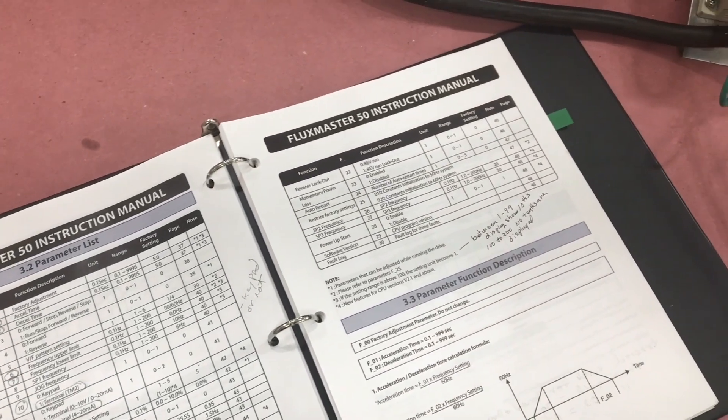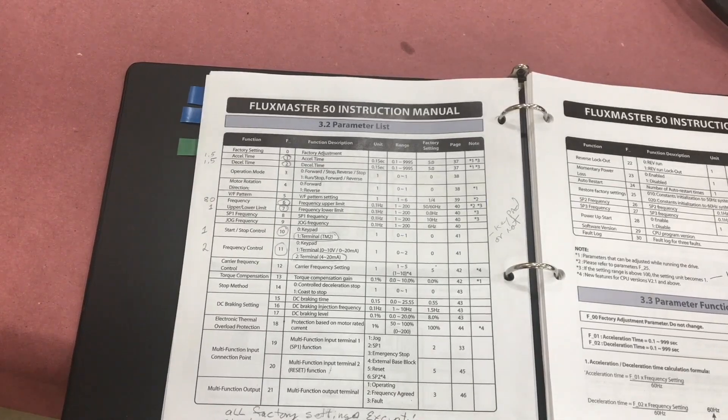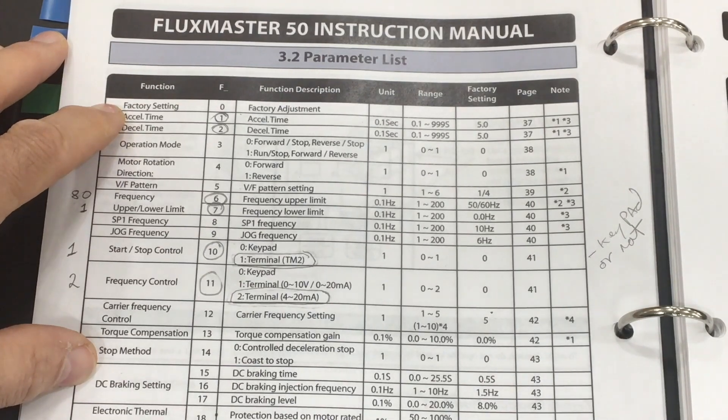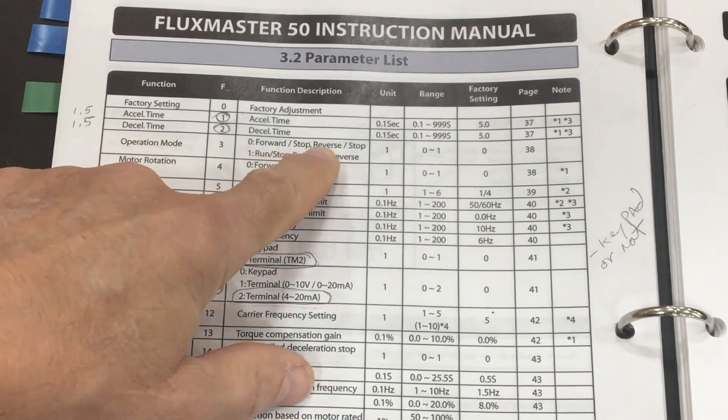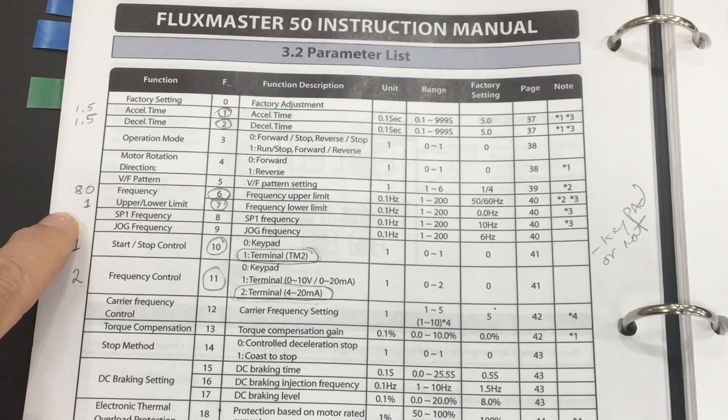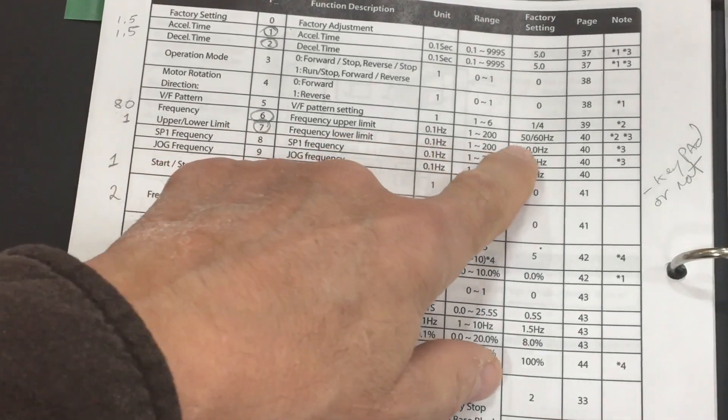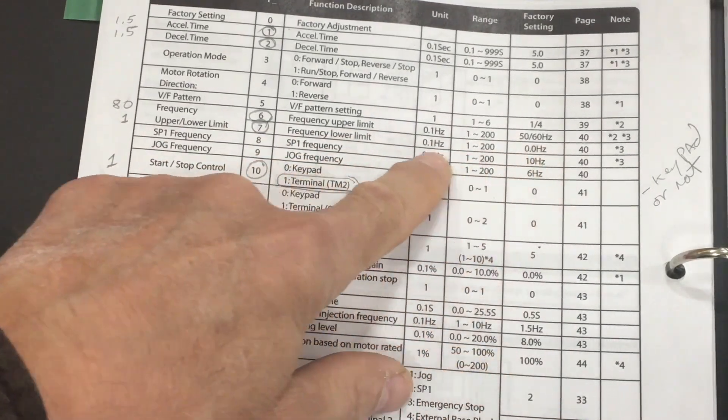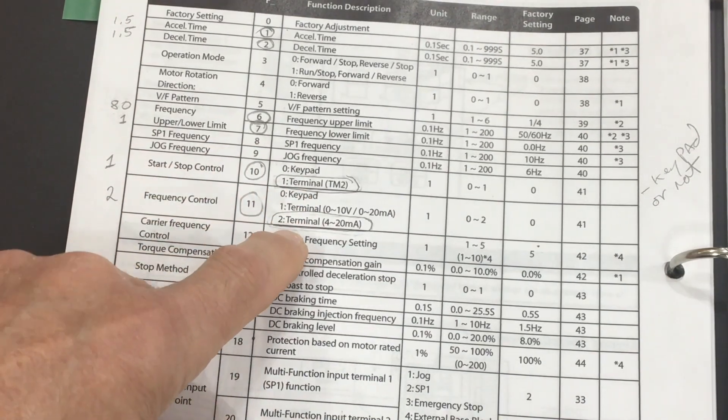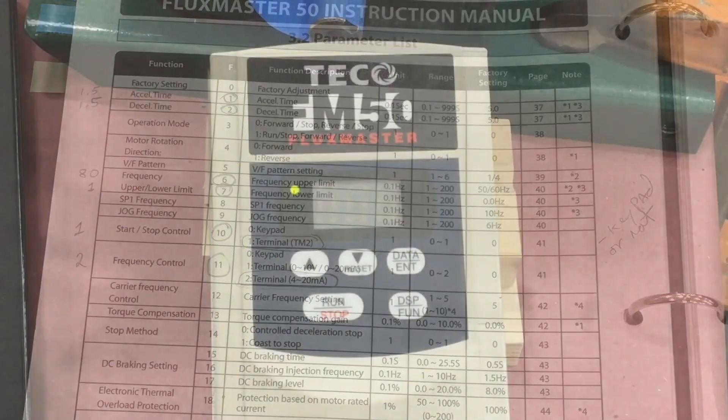This is the manual for the VFD. And there are probably, I don't know, 30 or 35 different settings you could make that are different than the factory settings. And I've changed six. The acceleration time and the deacceleration time is five seconds. Well, we're going to change that to a second and a half. The minimum frequency and the maximum frequency, I'm going to change those to 80 and one. And then finally, I don't want to be running the keypad all the time. So we're going to change that from the keypad to the low voltage terminal instead for controlling the VFD.